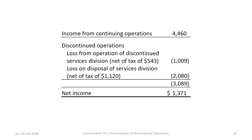Here is our completed discontinued operations section in this scenario. Instead of a net income of $3,389,000, there is a net income of $1,371,000. The company is still profitable because income from continuing operations of $4,460,000 exceeds the combined loss from operating the discontinued operation and the loss on disposition.